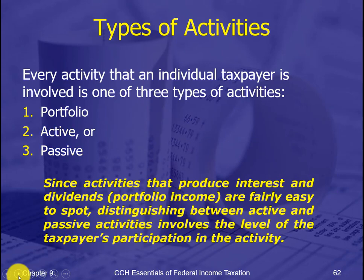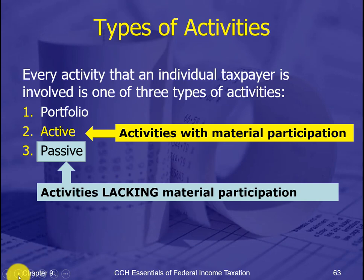Portfolio is pretty easy to identify, so the hard part is deciding whether it's active or passive. To some extent it's the type of activity or business, but more importantly it's how much time you spend in the business — what is your relationship to the business activity? If you have material participation, then it's active. If you don't, it can be passive. So two partners in the same business: one could have material participation and be active, and the other could be passive because they don't have material participation. It's your relationship to that business.